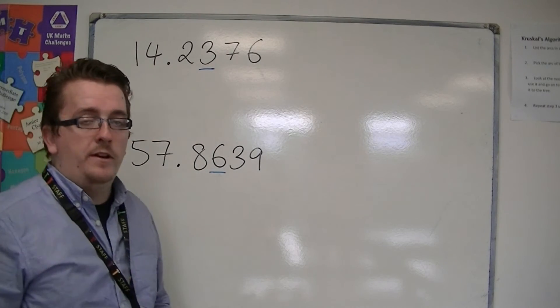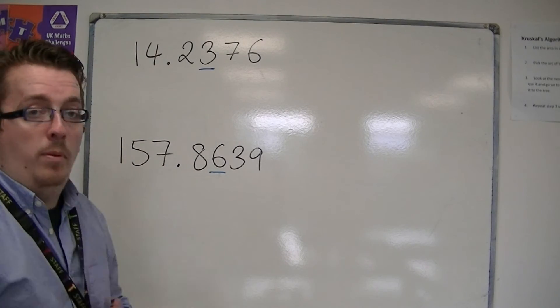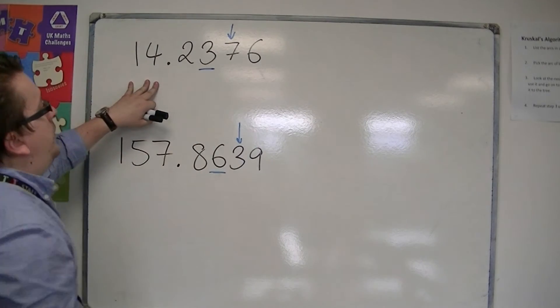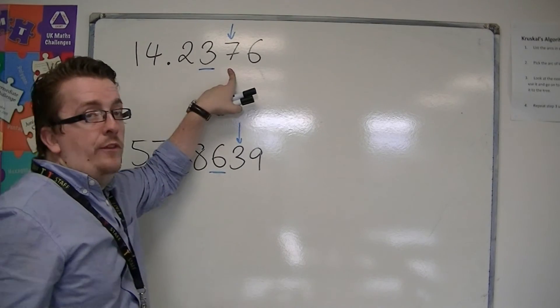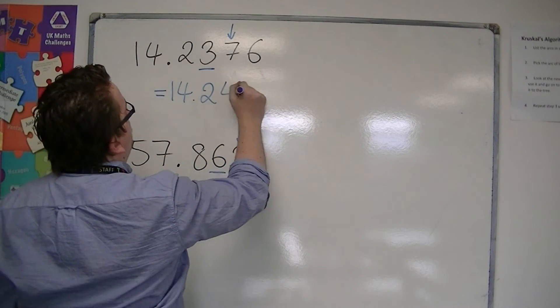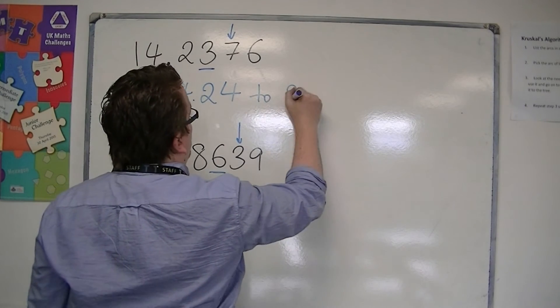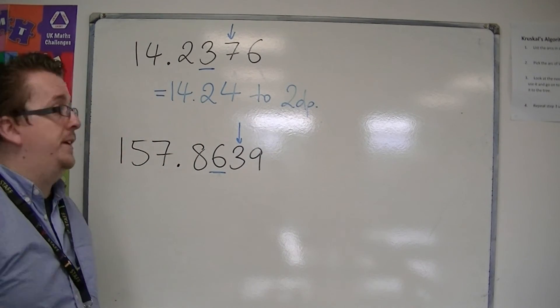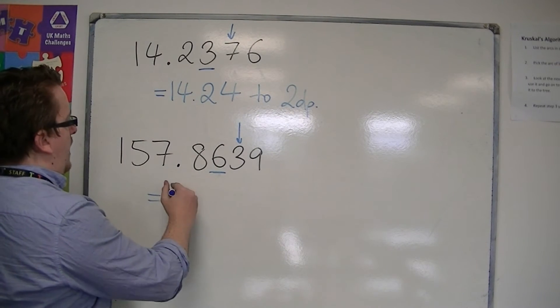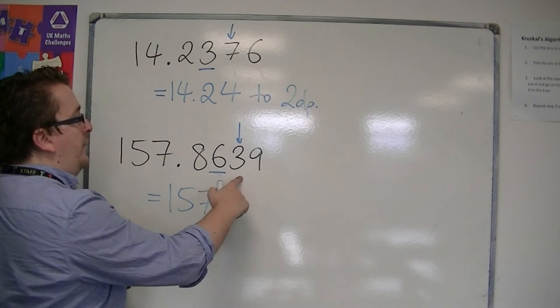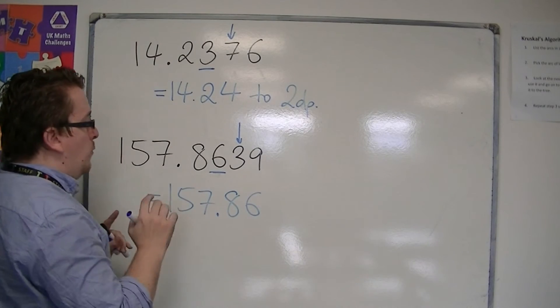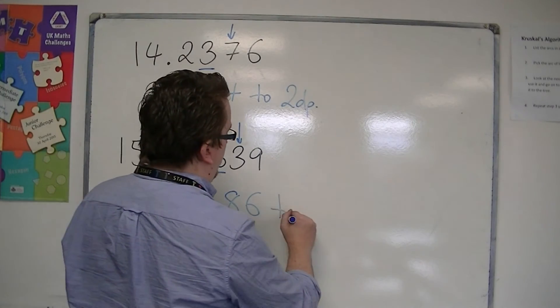I'm going to do both of them at the same time. So we look at the second decimal place and we look at one to the right. In the first example, we can see that one to the right is five or more, so it would round it up to 14.24 to two decimal places. So to two DP. And in this example, we would be looking at 157 point—well, the one to the right is less than five. So I round it down to 157.86 to two decimal places.